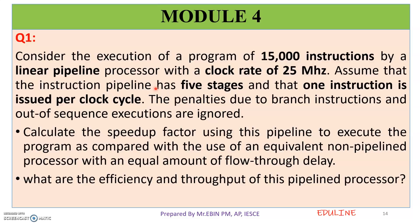This is the pipeline-related question. We have 15,000 instructions and use a linear pipeline processor. The clock rate is 25 MHz. Assume the instruction pipeline has 5 stages, with one instruction issued per clock cycle. We need to calculate the speedup factor using this pipeline compared to a non-pipelined processor with equal flow-through delay, as well as the efficiency and throughput of this pipeline processor.